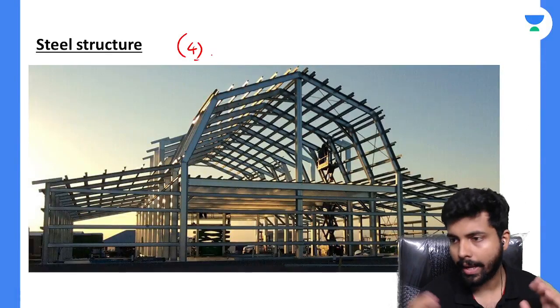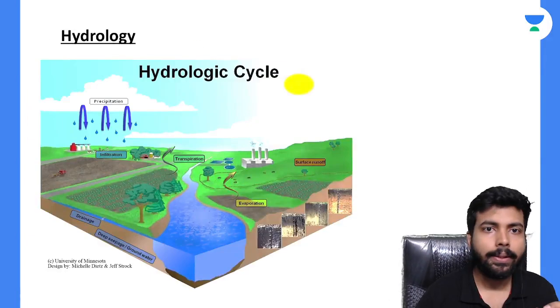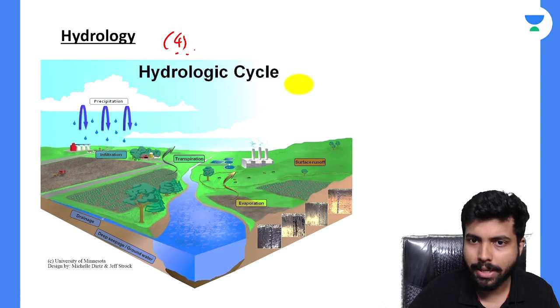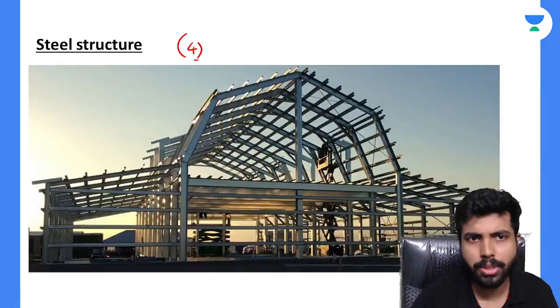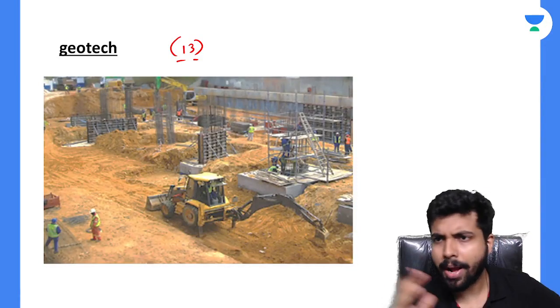Steel Structure has an expected weightage of 4 marks. For Hydrology, around 4 marks are expected, which is like 2 plus 2 mostly, or 1 plus 1 plus 2.